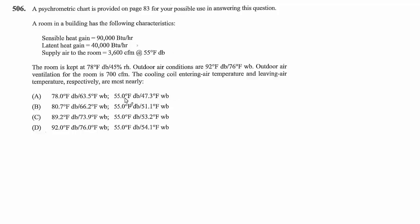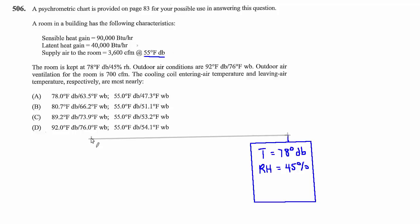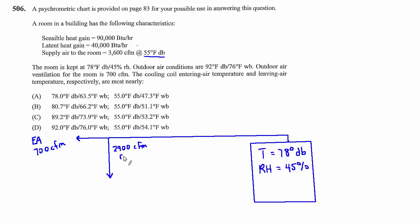In all cases the leaving coil temperature is 55 degrees, as that was given. To work through this, let's draw a picture of the scheme. The conditions in the room are 78 degrees dry bulb and 45% relative humidity. There's extract from the room because 700 CFM of fresh air is being introduced, so there must be exhaust air of the same volume — 700 CFM. The remainder gets recirculated: 2,900 CFM of recirculated air. Outside air being introduced is 92 degrees dry bulb, 76 degrees wet bulb.